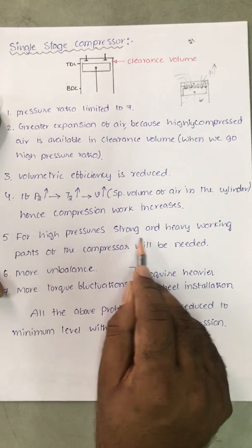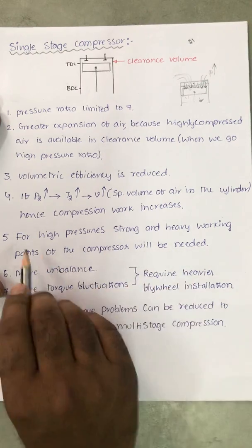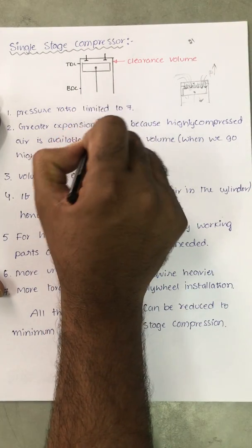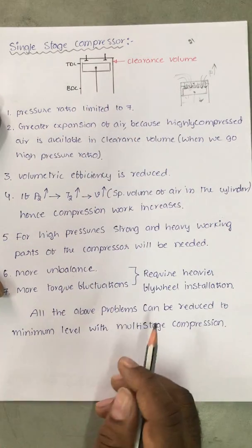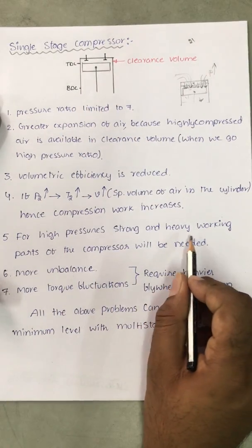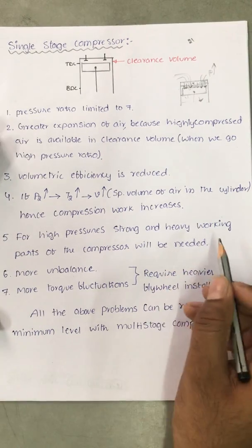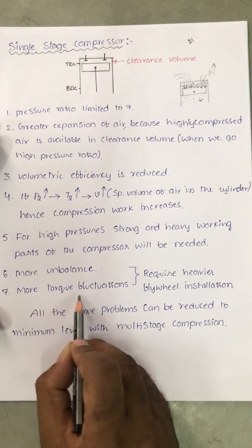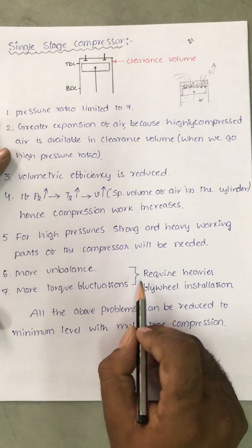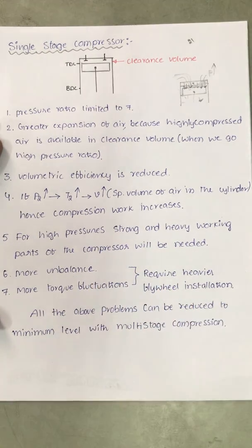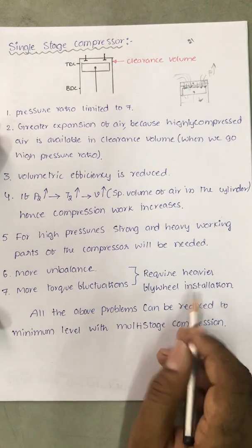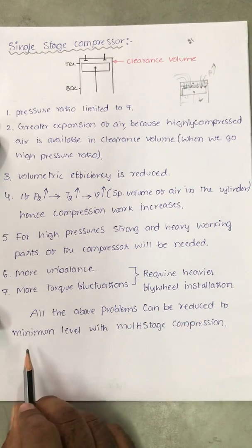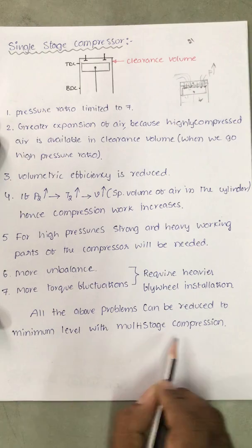For high pressures with only one cylinder, strong and heavy working parts are needed — the crankshaft, piston, and connecting rod all need to be very strong and heavy. Large parts cause more imbalance and more torque fluctuations. To balance these, a heavier flywheel installation is required. All these problems can be reduced to a minimum with multistage compression.